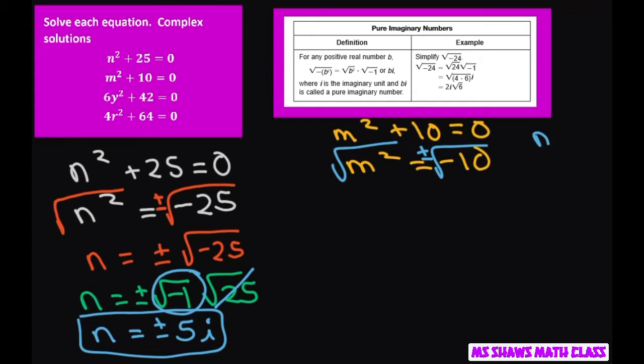So if you had n squared equals 64, we know that 8 squared equals 64, but so does negative 8 squared equals 64. That's why you're putting the plus and minus. So we get m equals plus or minus square root of negative 10.